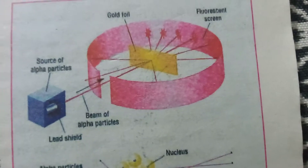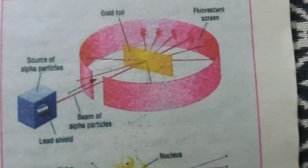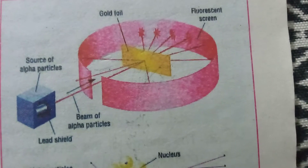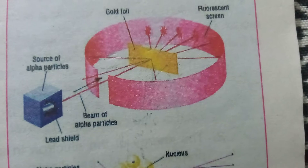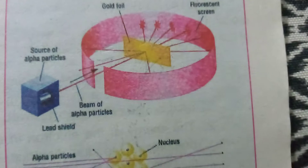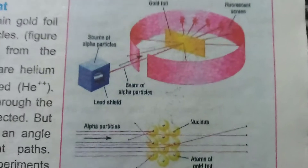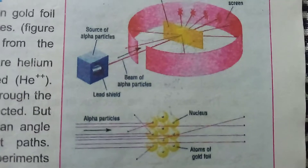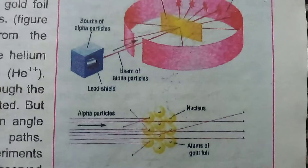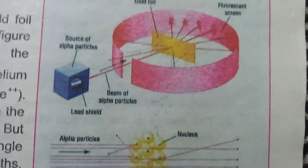In his model, Rutherford performed an experiment in 1911 to describe the structure of an atom. He performed the experiment by bombarding alpha particles on a gold foil. He fired alpha particles, which have a double positive charge, at the gold foil.